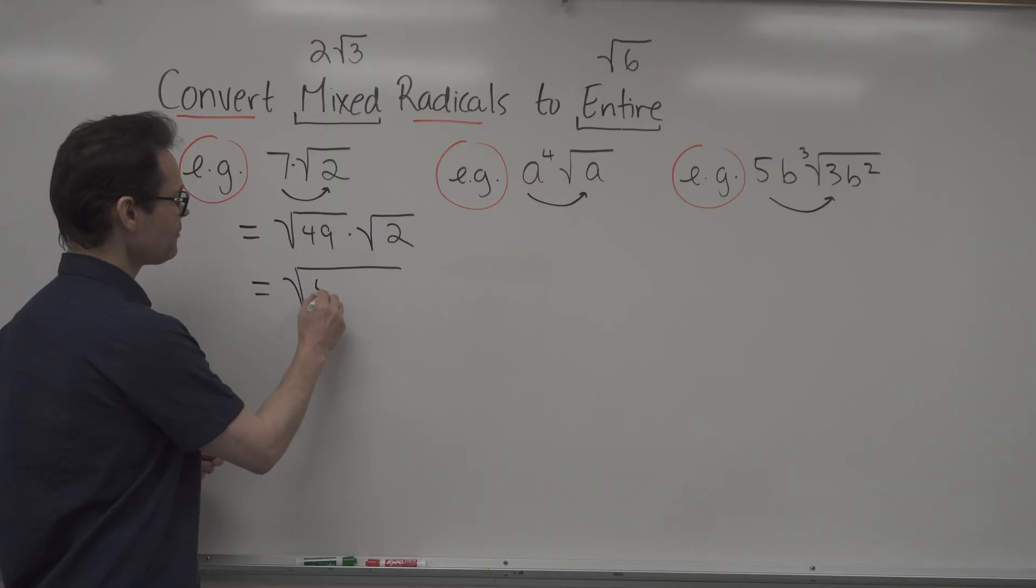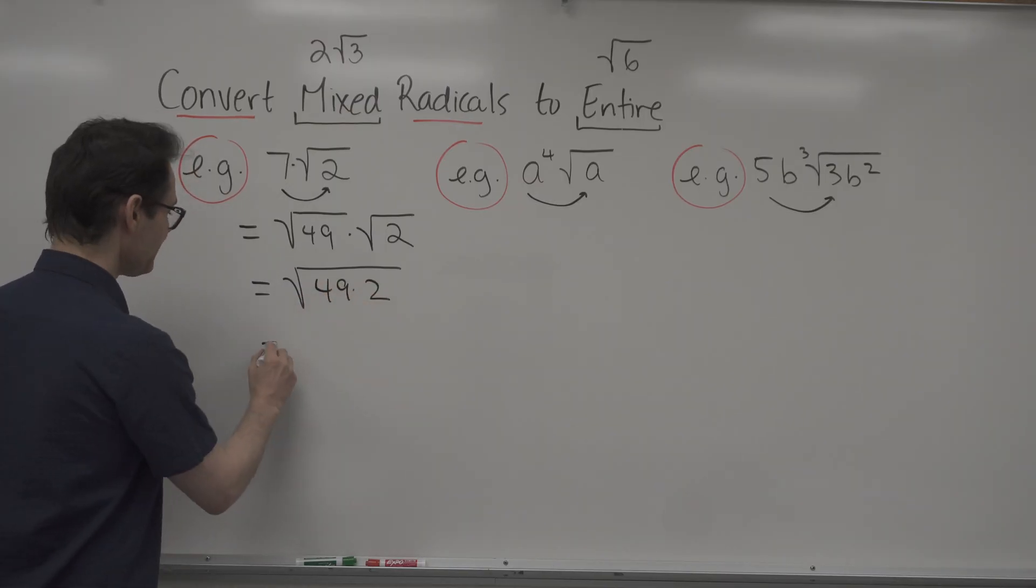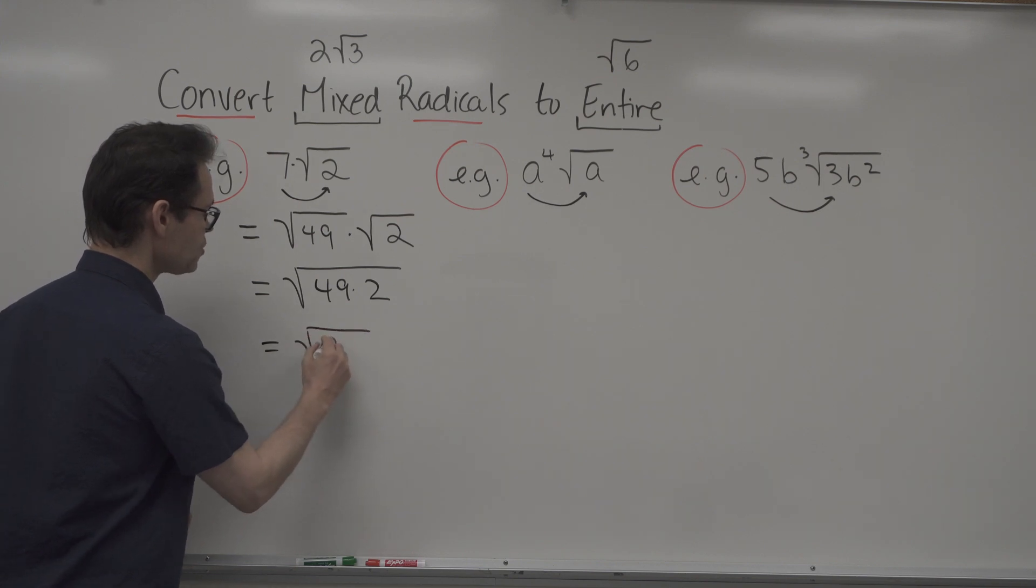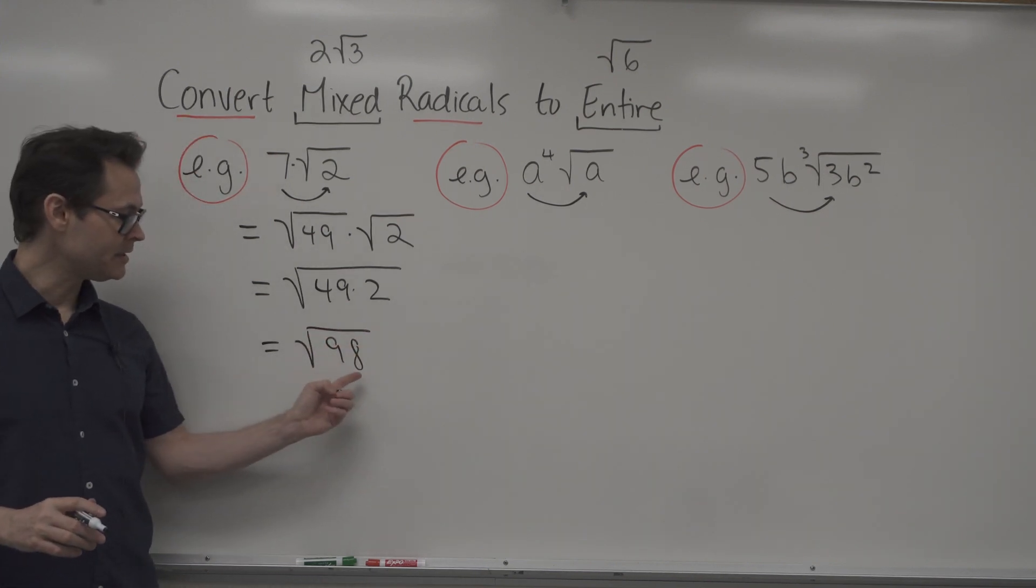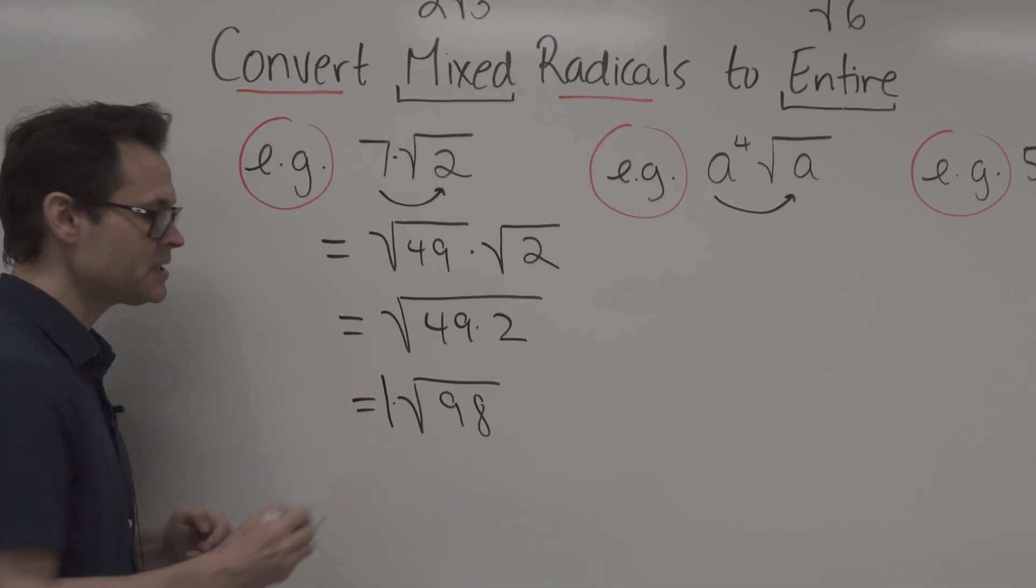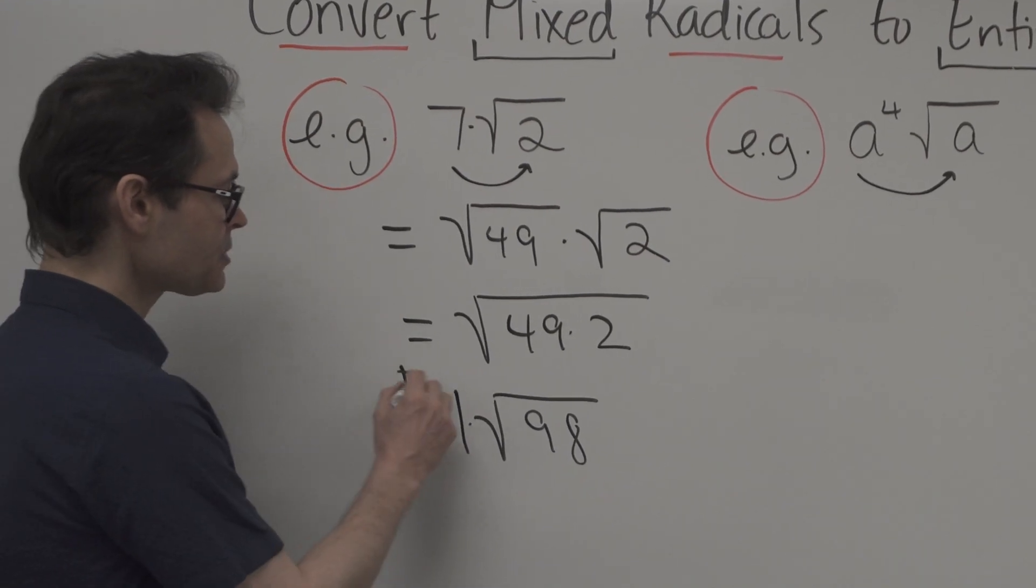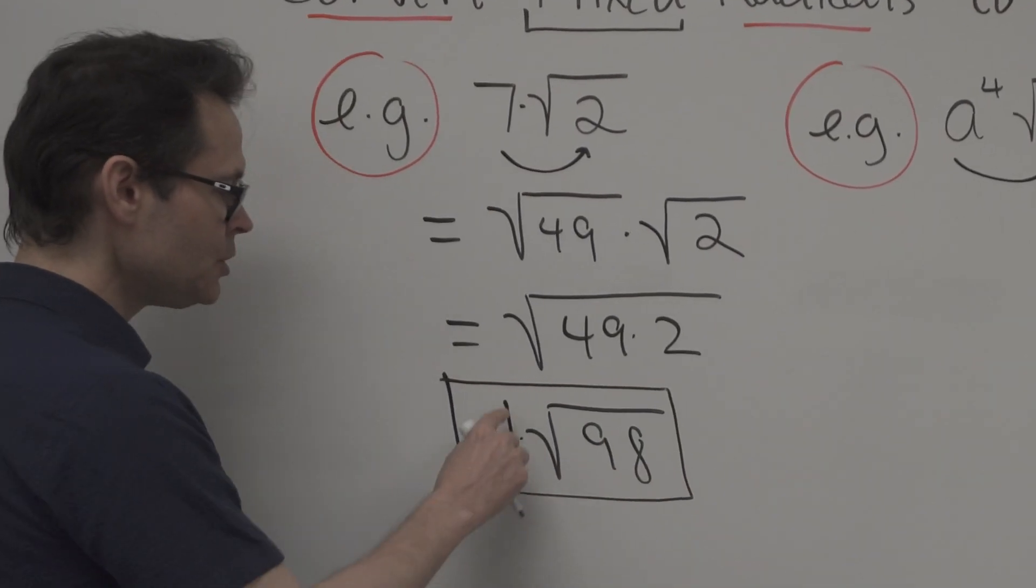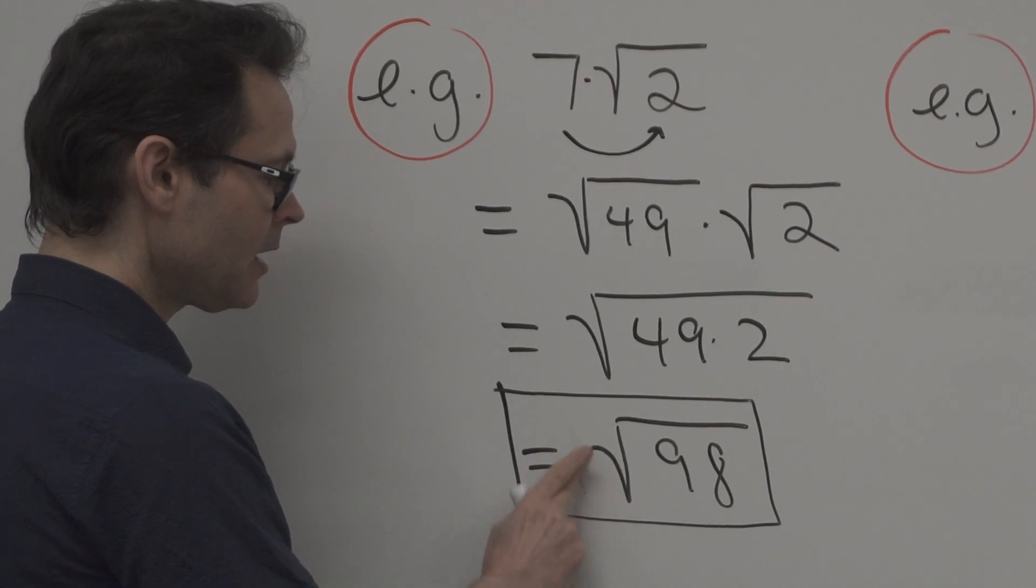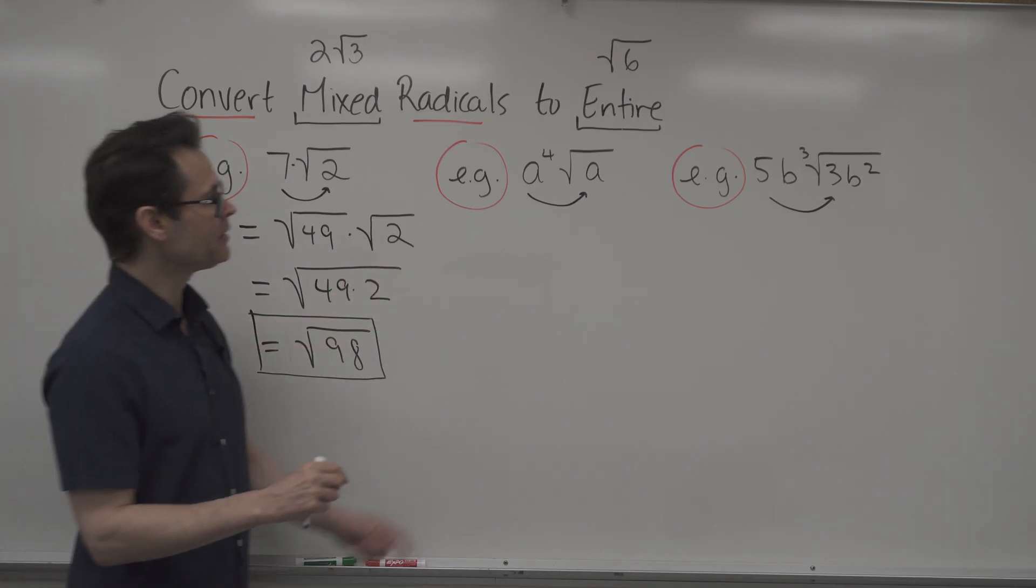So here I've got 49 times 2, and then I can just multiply that together, and that gives me the square root of 98. And you can see the number is entirely under the radical, where the coefficient is actually 1. And that's how you want to finish your answer. You do not need to put the 1 there. But just know the coefficient is 1. So let's take a look at the next one here.